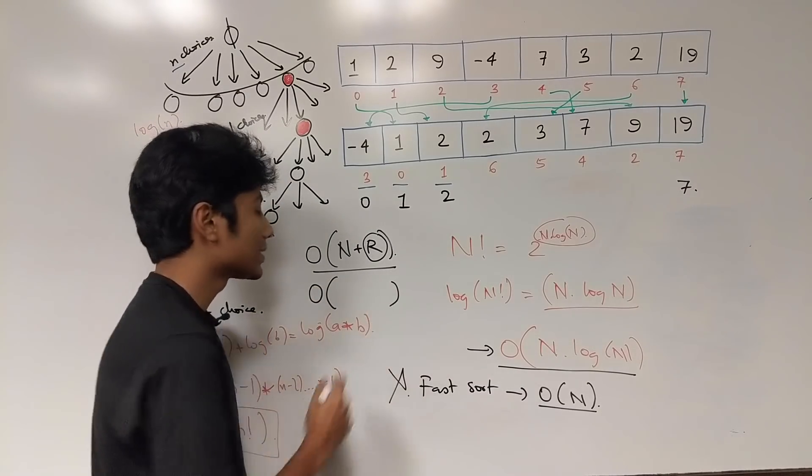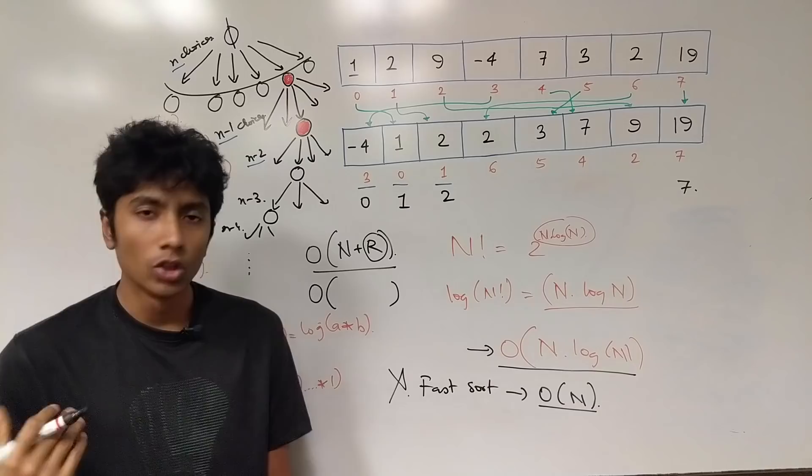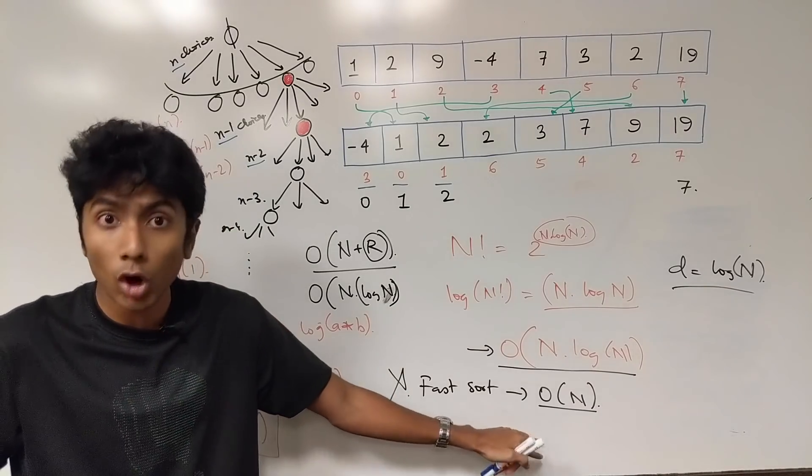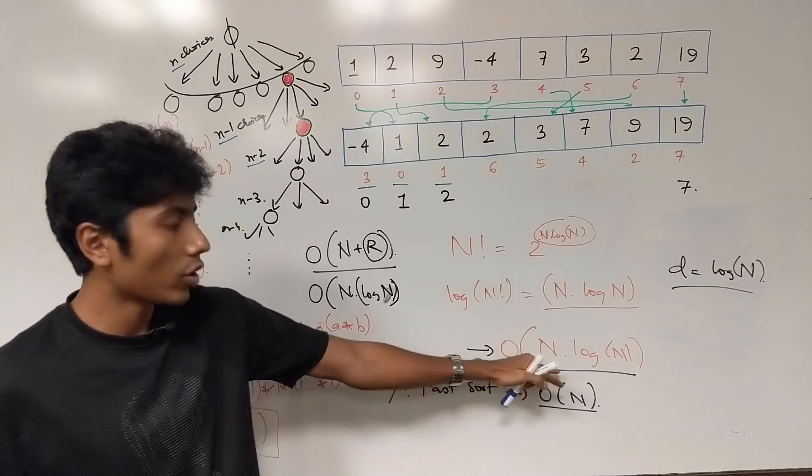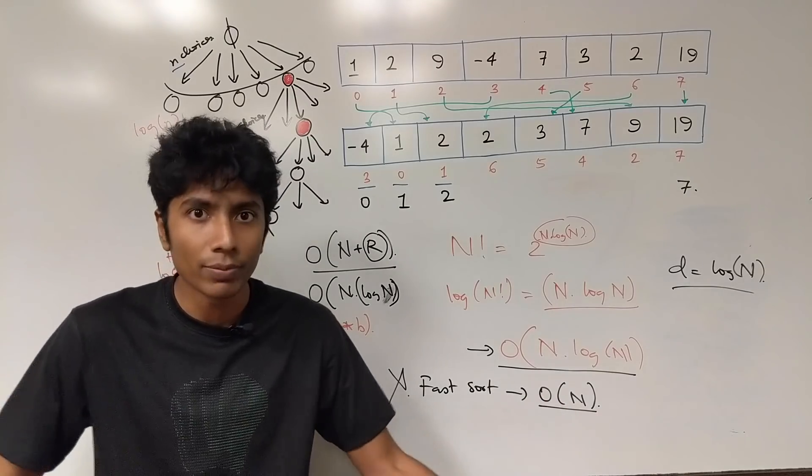Some people were talking about radix sort in the comments. No, no, no, no, no. We have fast sort proven to be not existing. And n log n to be the fastest possible algorithm known and can ever be possible.